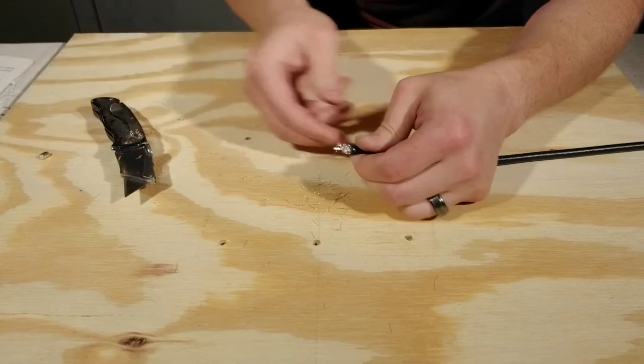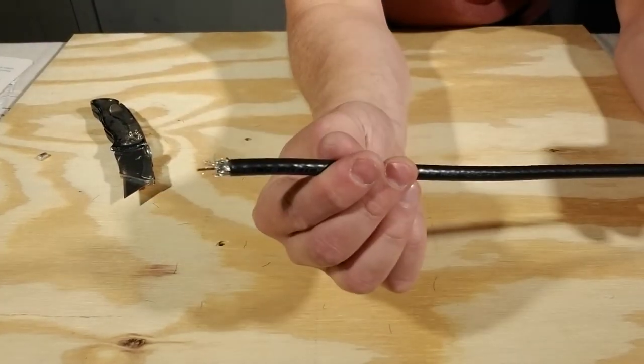Once you expose that center conductor, just fold all of the loose braids back towards the black jacket.